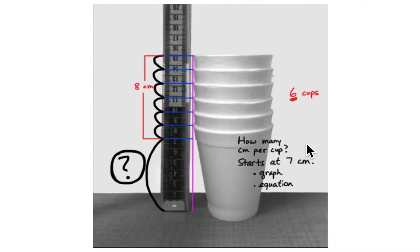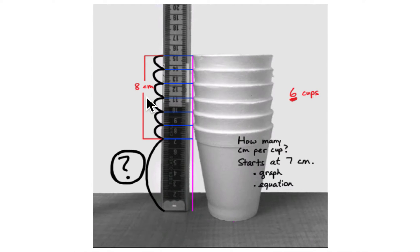How many centimeters per cup get added? This is the rim of the cup — from this point to this point. Six rims equals eight centimeters, so maybe there's something there we can use. If we start at seven centimeters, after that maybe we can turn that into a relationship of some sort.